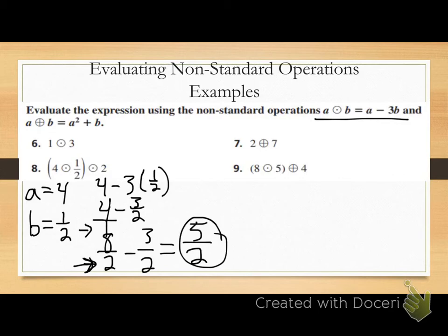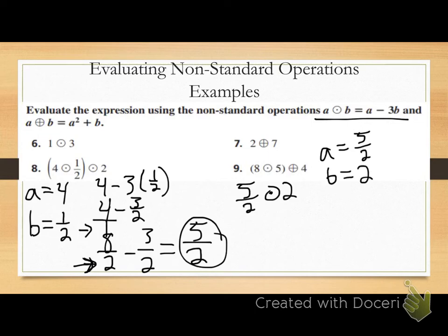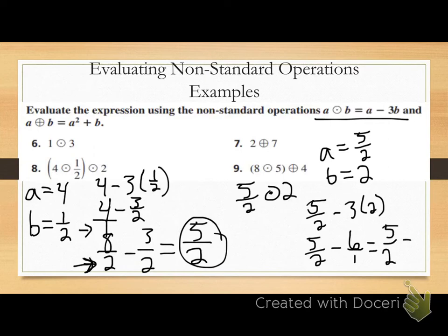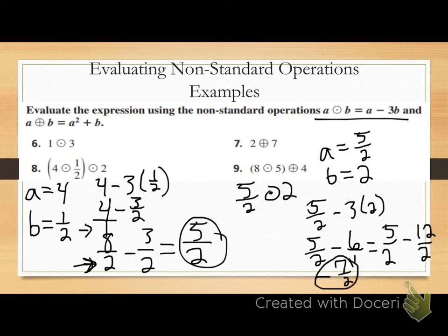Now, this is not my final answer because I still have circle-dot 2. I now have 5 halves circle-dot 2, so I have to do that final operation. My a value is 5 halves, b value is 2. So I get 5 halves minus 3 times 2 — that's 5 halves minus 6. I need a common denominator again — 2 is good. Multiply 1 by 2 to get to 2, so 6 times 2 gives me 12. So 5 halves minus 12 halves gives me negative 7 halves. My final answer for number 8 is negative 7 halves.